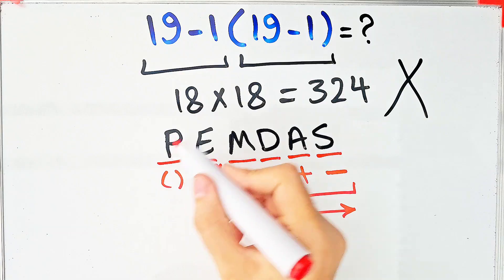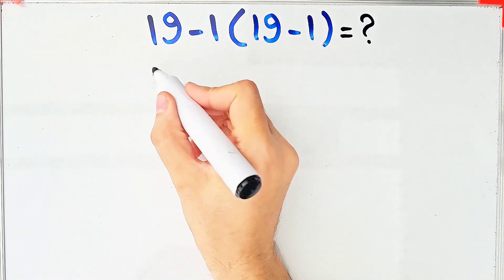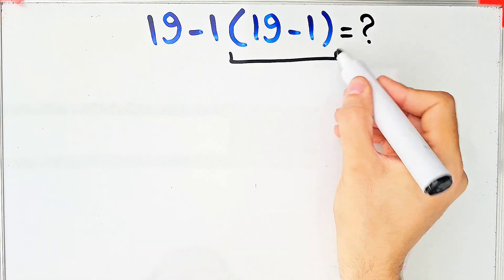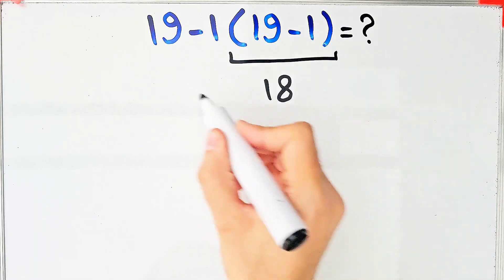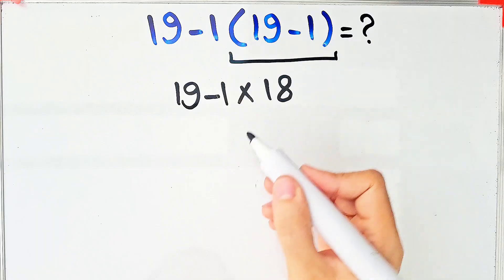According to this rule, first we simplify the parentheses. We have 19 minus 1, then times 19 minus 1, which equals 18. The question is 19 minus 1, then times 18.